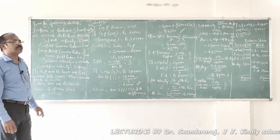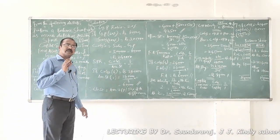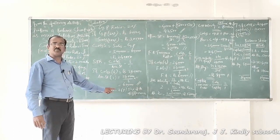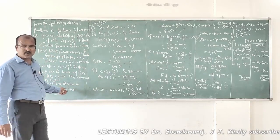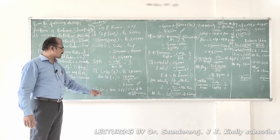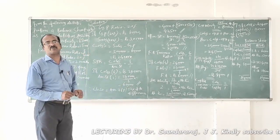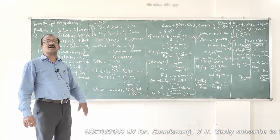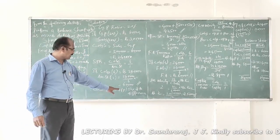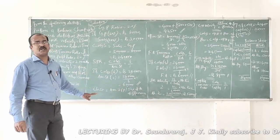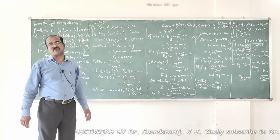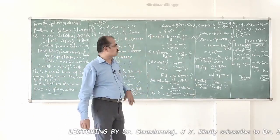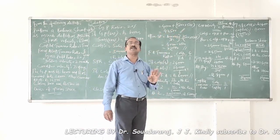Average stock is (Opening Stock + Closing Stock) ÷ 2. Using the average stock and the additional information, we can calculate both values. Closing stock = Average stock + 50% of the difference between closing and opening stock. Since closing stock exceeds opening stock by 5,000, we add 50% of 5,000 (= 2,500) to 40,000: closing stock = 42,500 rupees.